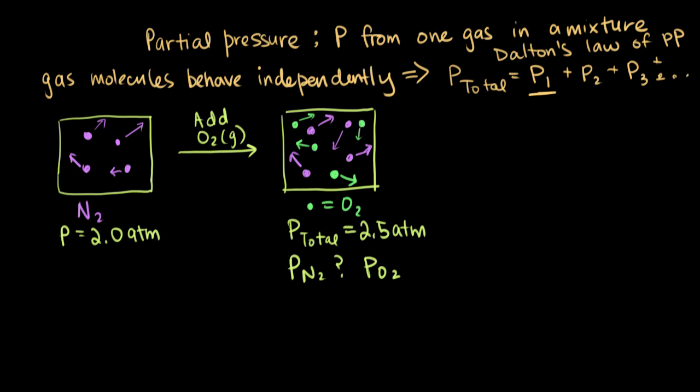So if we write this out for our particular system, we can say P total, which we know is 2.5. We know that P total must be equal to the partial pressure from the nitrogen plus the partial pressure from the oxygen.